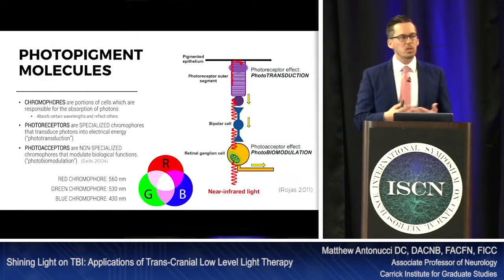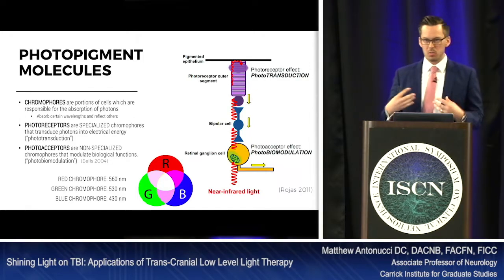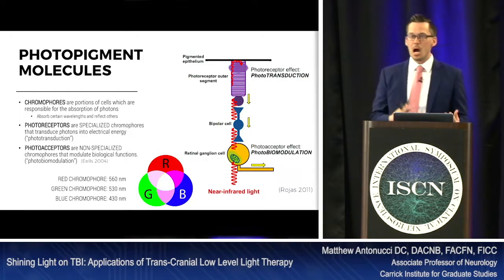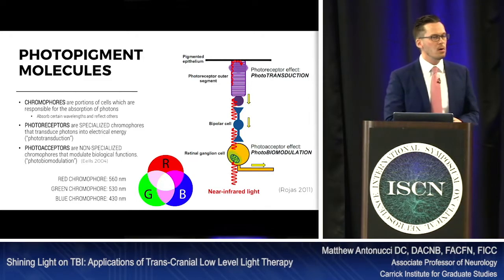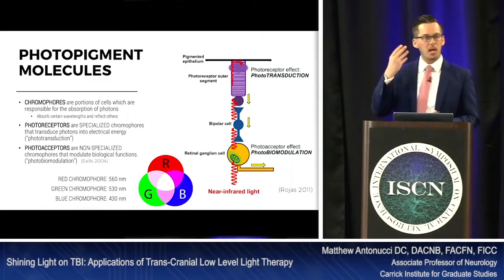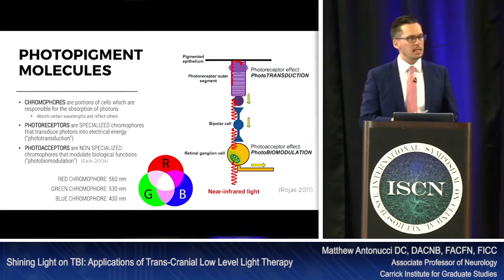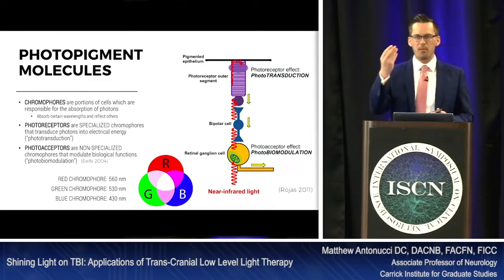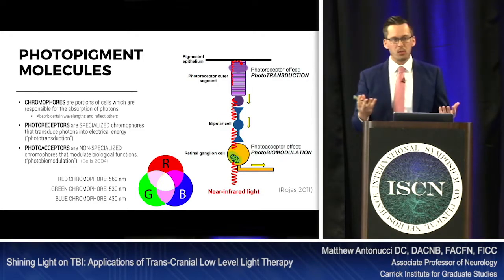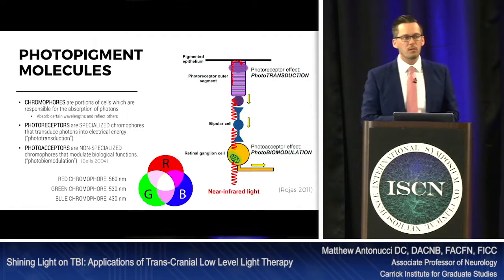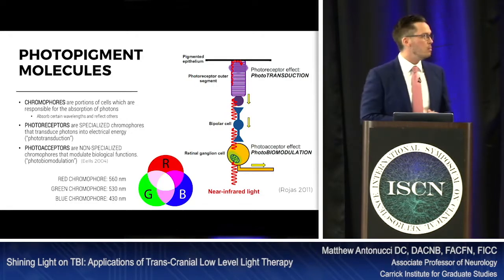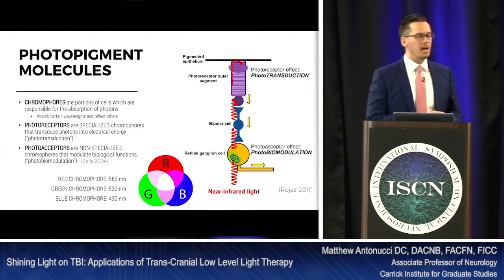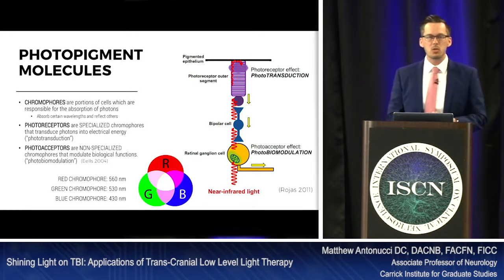There are two different types of chromophores: specialized and non-specialized. The specialized ones you're using right now — we have rods and cones inside of our eyes that allow us to accept photons. We have three different types of cones in our eyes: reds, greens, and blues, and that allows us to see the visual spectrum.